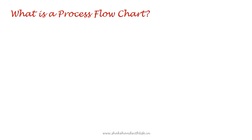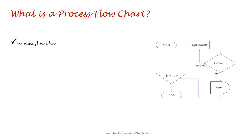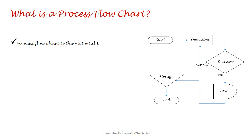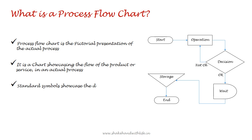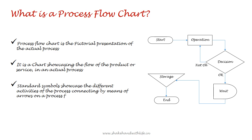What is a process flowchart? A process flowchart is the pictorial presentation of the actual process. It is a chart showcasing the flow of the product or service in an actual process. Standard symbols showcase the different activities of the process, connected by means of arrows on a process flowchart.